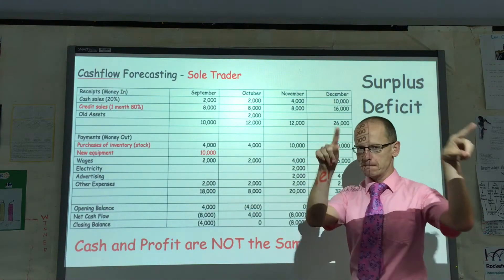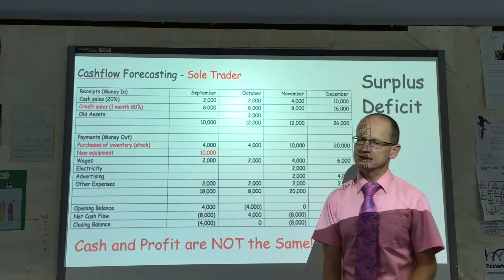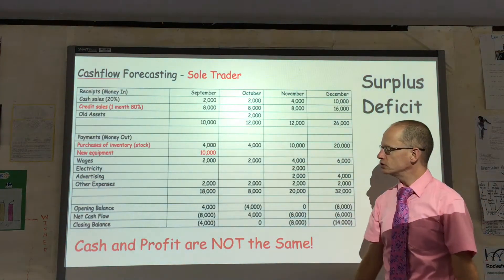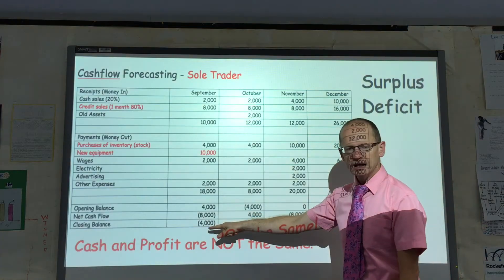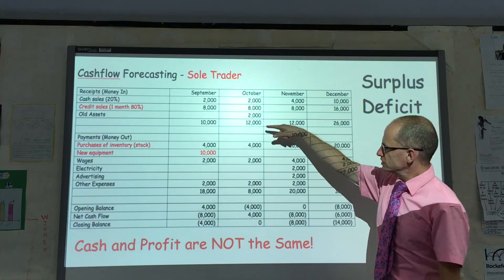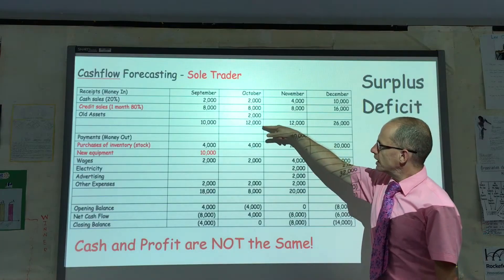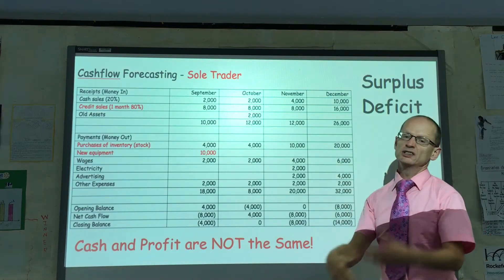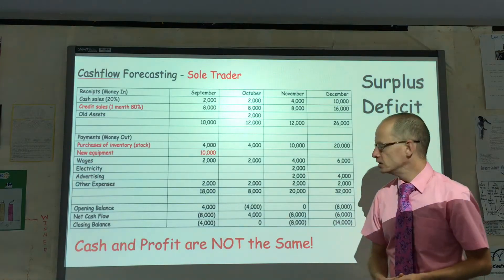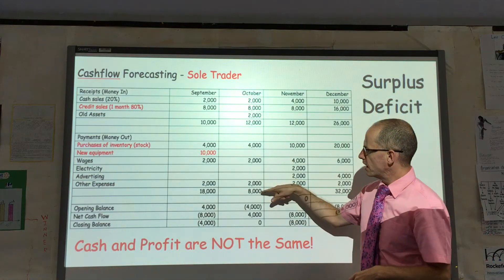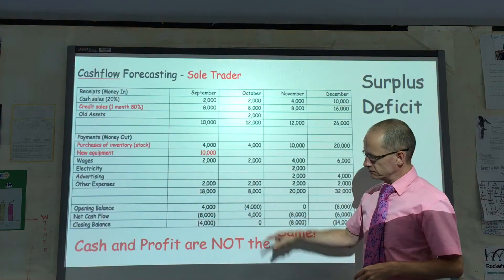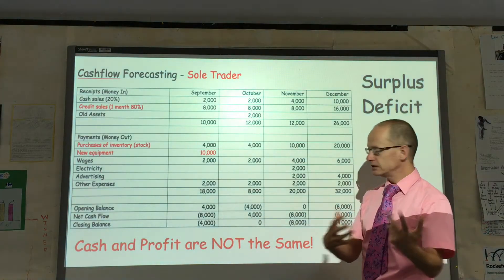So 4,000 plus minus 8,000 means that the closing balance is minus 4,000. The closing balance at the end of one month becomes the opening balance at the start of the next month. Then you can see here the amount of money in during October is 12,000, the amount of money out is 8,000, so 12,000 minus 8,000 gives us a closing balance of zero.